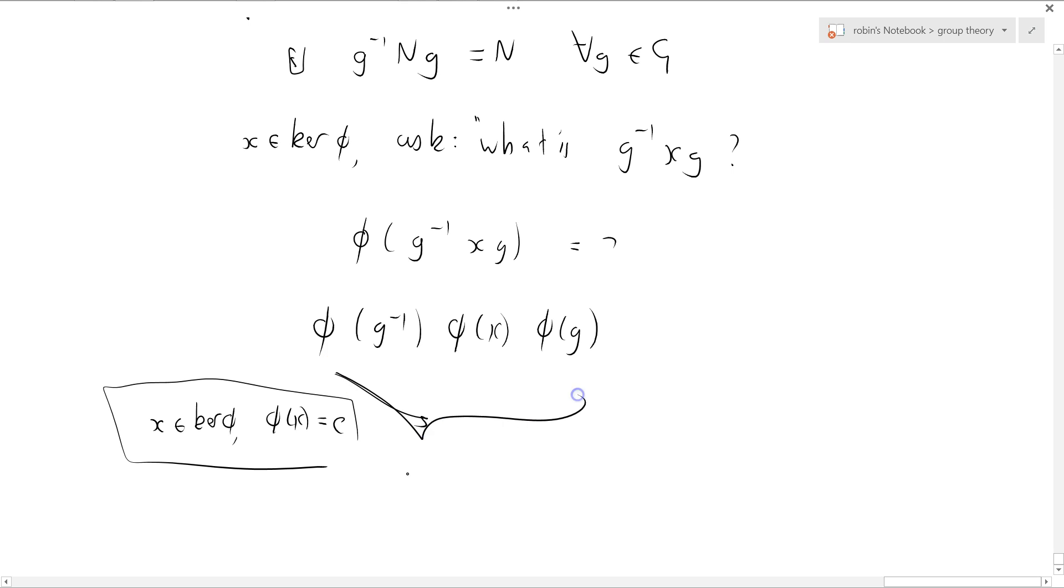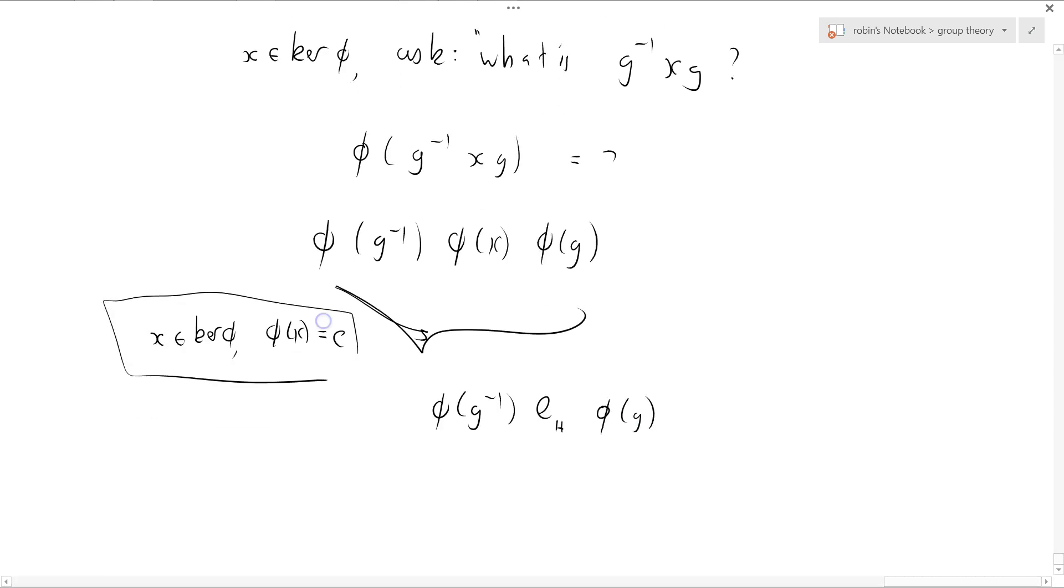And so this thing here is phi G inverse E subscript H if you wanted phi of G. These three terms, one, two, three, are these three terms here, and of course, this just disappears.